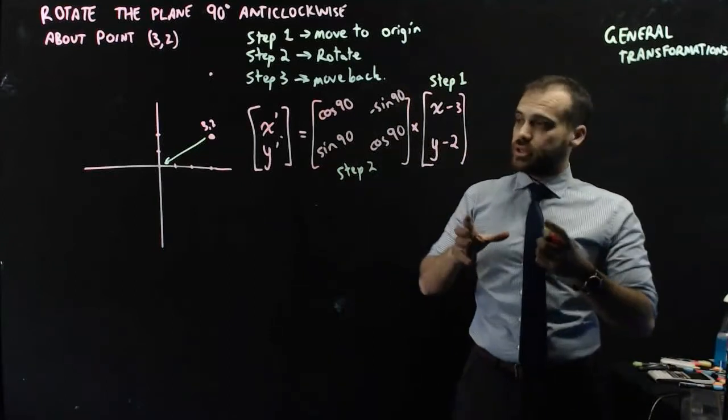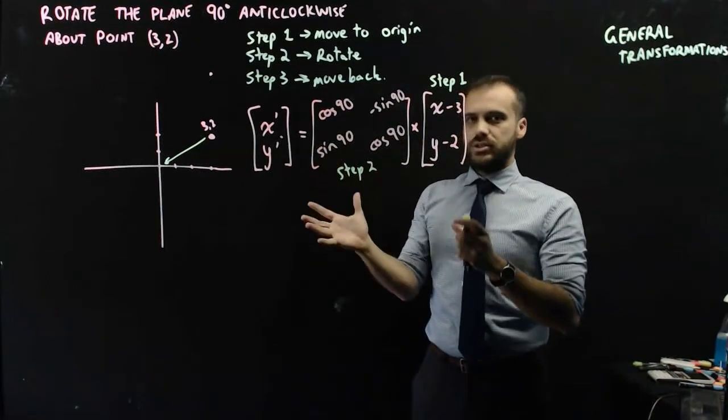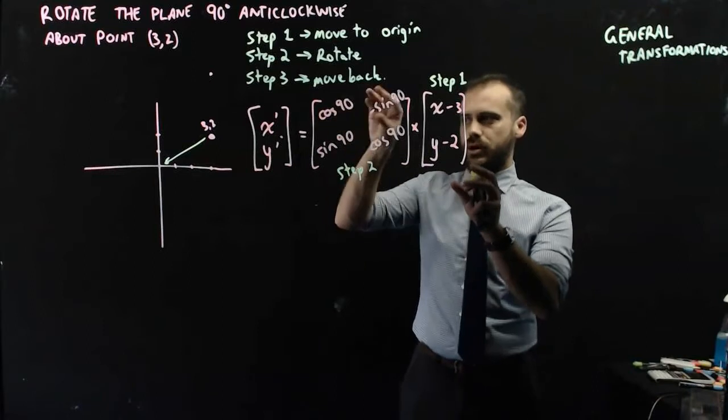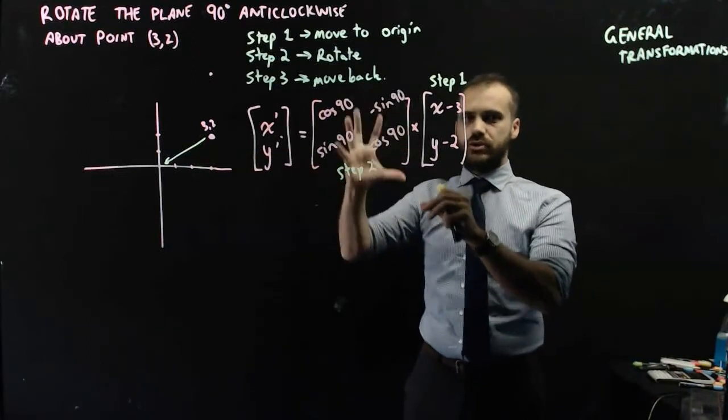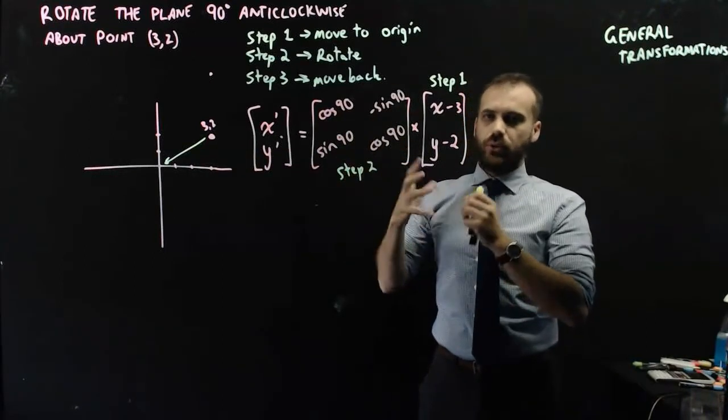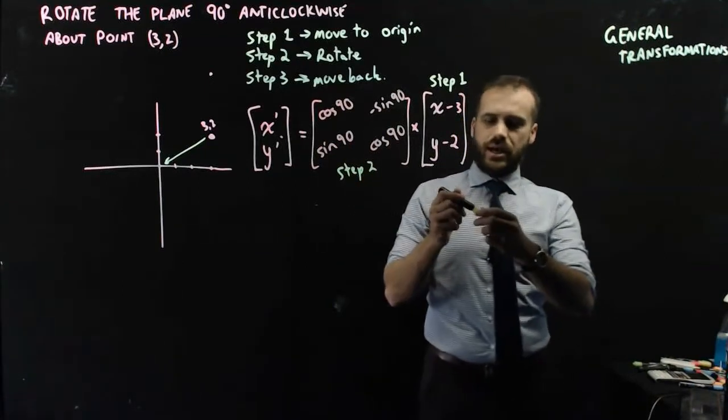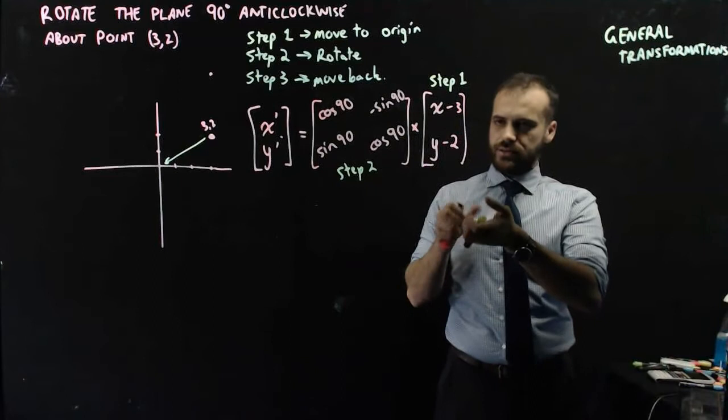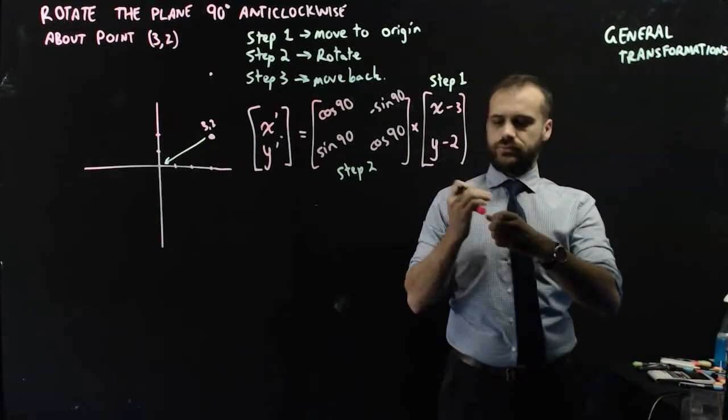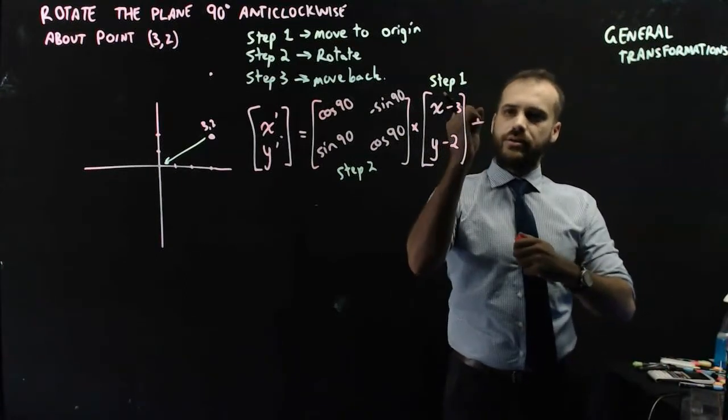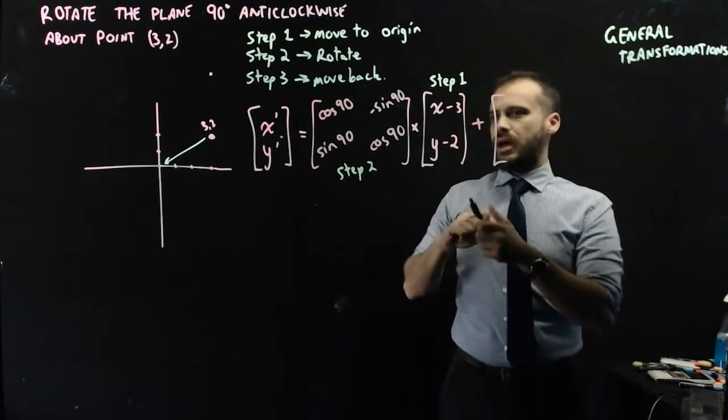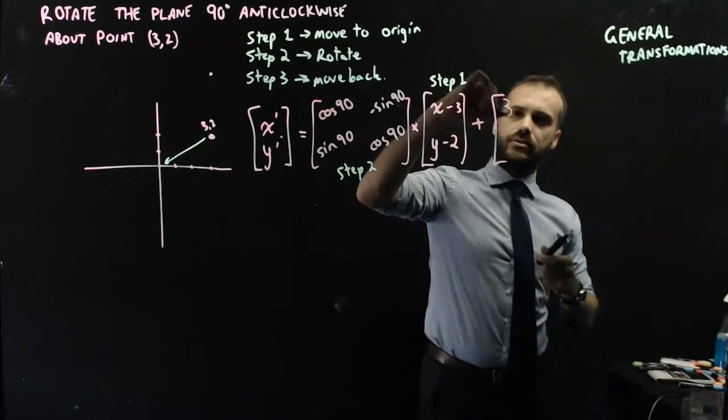Okay. But I'm not finished yet. What do I now need to do now that I've done step 1, move it to the origin; step 2, rotate it? Now I need to move it all back. So I'm going to have to take that now and add... add and move back again. 3.